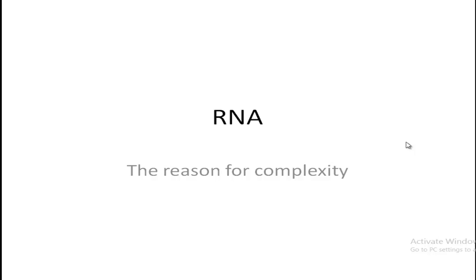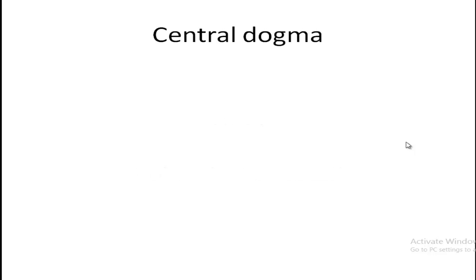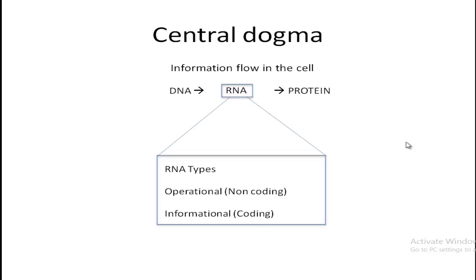In this video we are going to discuss about different types of RNA, and at the end we are going to appreciate the reason for complexity in a cell — RNA is the sole reason for complexity in a particular cell. We will begin with the central dogma: DNA is the genetic material and it codes for RNA, which we call transcription, and from RNA the protein is synthesized, which we call translation. Both transcription and translation are controlled in many other ways.